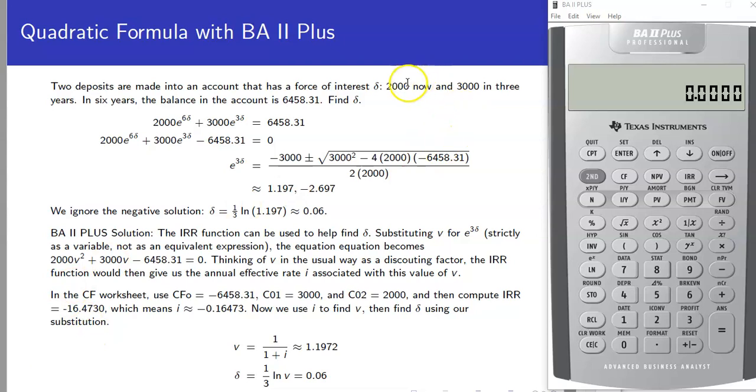So we're depositing $2,000 now and that's going to sit in there for six years. If we have a force of interest of delta, we know it's going to be e to the 6 delta as our accumulation factor. Same thing with the $3,000 deposit, it's just going to be in there for three years rather than six.